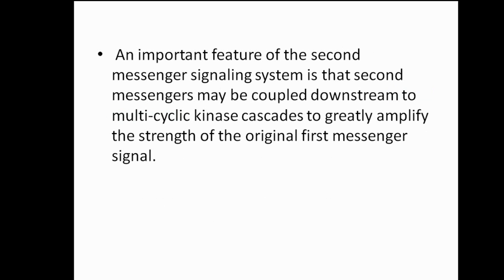An important feature of the 2nd messenger signaling system is that the 2nd messenger may be coupled downstream to multi-cycle kinase cascades to greatly amplify the strength of the original 1st messenger signal.